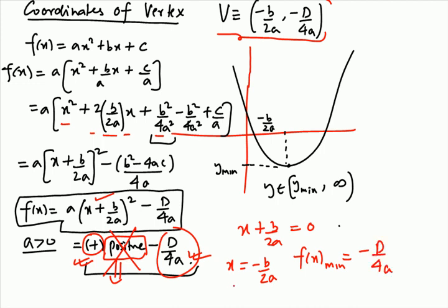So the x-coordinate of the vertex is -b/2a — that is when the minimum occurs — and the y-coordinate is -D/4a when this minimum occurs. That gives us the coordinates of the vertex as (-b/2a, -D/4a).